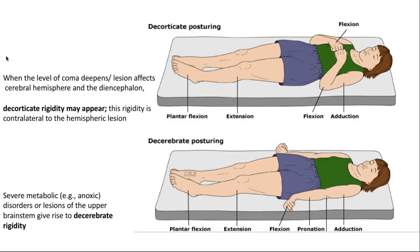Decorticate and decerebrate posturing are two different responses to painful stimuli. Common features include adduction of the arms, flexion of the wrist, extension of the knees, and plantarflexion of the ankles. The difference: decorticate has flexion of the elbows, while decerebrate has extension and pronation of the elbows. Decorticate posturing can be seen in metabolic coma, bihemispheric dysfunction, and even midbrain involvement. As the lesion becomes more caudal involving the pons, the patient may progress from decorticate to decerebrate posturing.